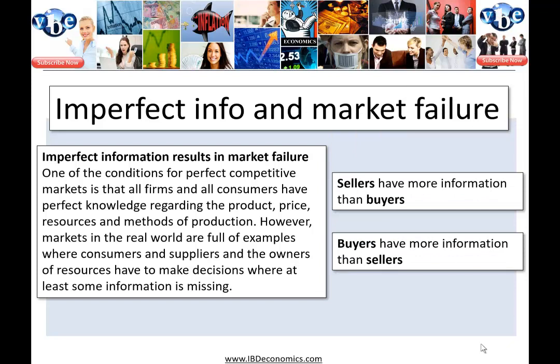One of the conditions for perfectly competitive markets is that all firms and all consumers have perfect knowledge regarding the product, price, resources, and methods of production. But this is literally impossible. Markets in the real world are full of examples where consumers, suppliers, and resource owners must make decisions with missing information — sellers can have more information than buyers, and buyers more than sellers.